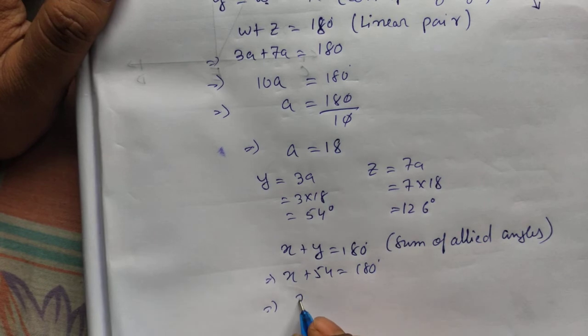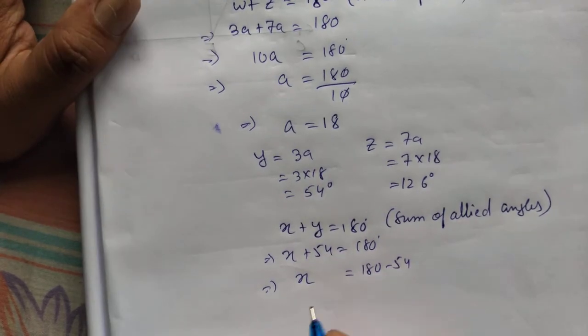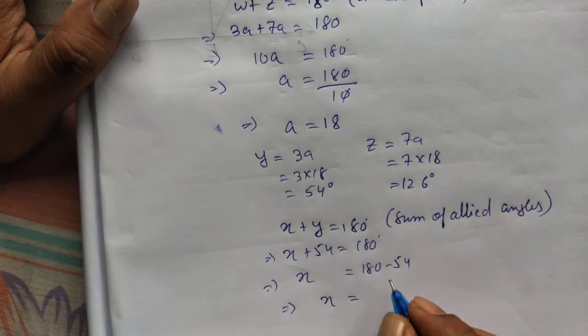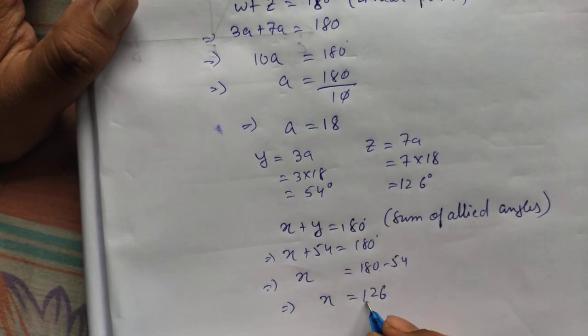What will be x? 180 minus 54. So x will be 10 minus 4 is 6. 7 minus 5 is 2. 126 degree. So we got the value of x.